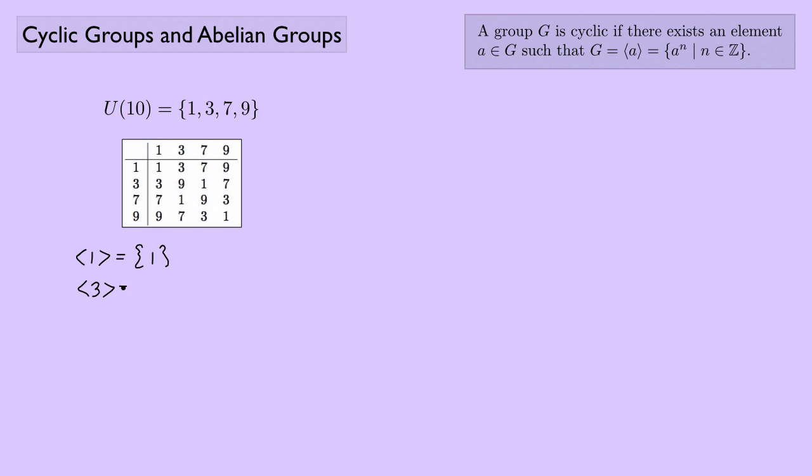How about 3? Look at the generators of 3. I start with 3, then 3 times 3 is 9, I have 9. Then I want to do 9 times 3, that's 7. This is looking good. Then 7 times 3 is 1. So 3 ends up being a generator. We can see that this group is cyclic. Just to show you the other elements here, if I were to look at the group generated by 7 here, the set generated by 7, I would end up getting the same thing. 7 times 7 is 9, then 9 times 7 is 3, then 3 times 7 brings us back to 1.